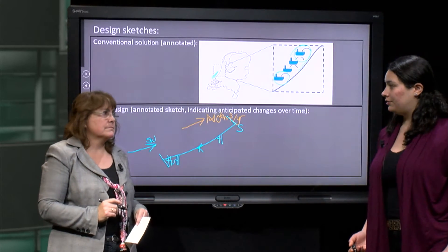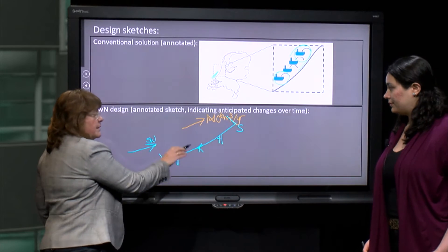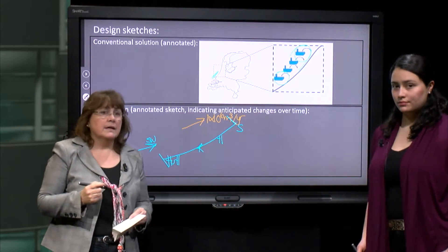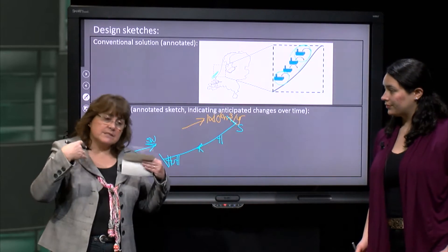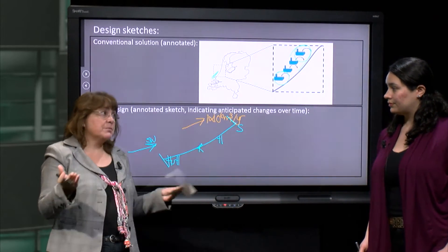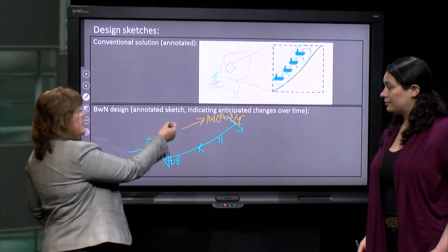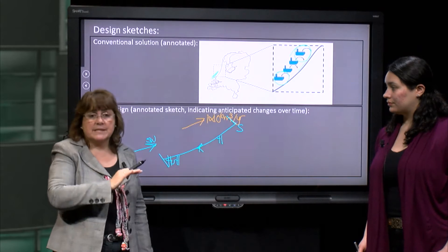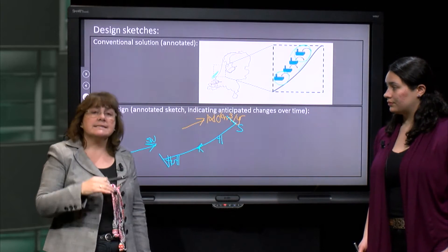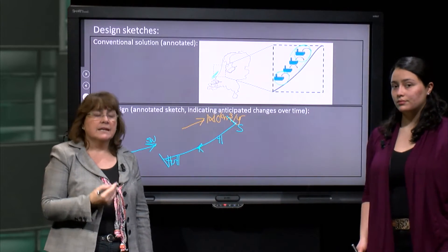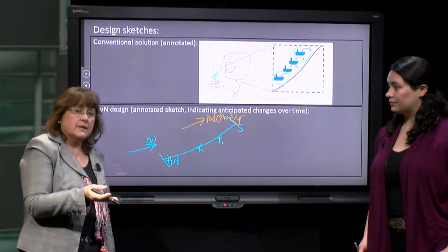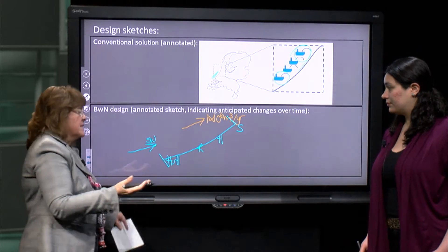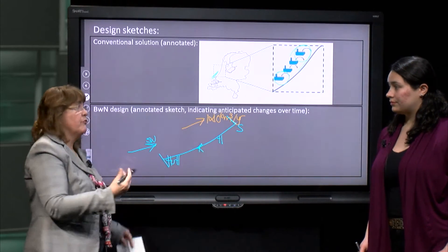If we don't continue with sand nourishment, the coast would actually retreat backwards — we would have coastal erosion in this stretch. We need this huge amount of sand, but where will we get it? The sand comes from the North Sea, which has a sandy seabed of minus 20 to minus 30 metres. What we then need to think about is where we would locate such a mass of sand and what kind of shape or form we would give it.